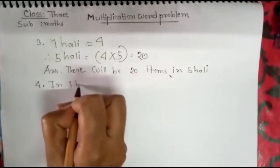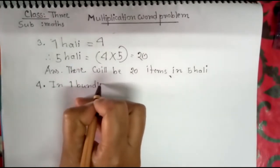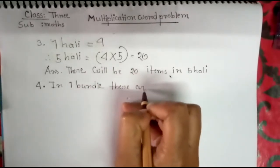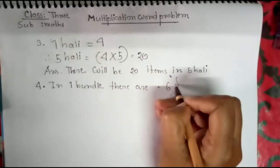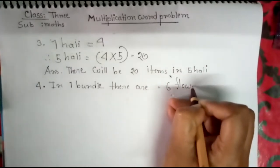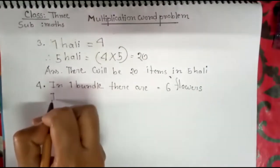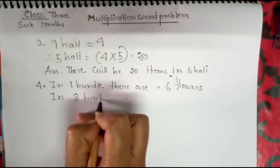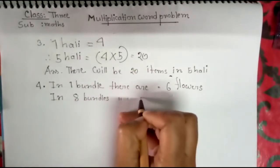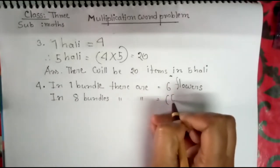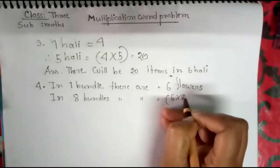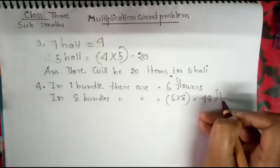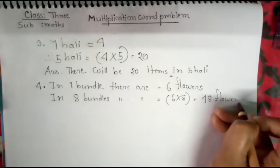In one bundle there are six flowers. In eight bundles there are six times eight, forty-eight flowers.